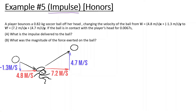A player bounces a 0.82 kg soccer ball off her head, changing the velocity of the ball from 4.8 m/s in the x direction plus negative 1.3 m/s in the y direction, to 7.2 m/s in the x direction and 4.7 m/s in the y direction. If the ball is in contact with the player's head for 0.0067 seconds, what is the impulse delivered to the ball, and what is the magnitude of the force exerted on the ball? So we see this ball comes down like this and then goes up like that.